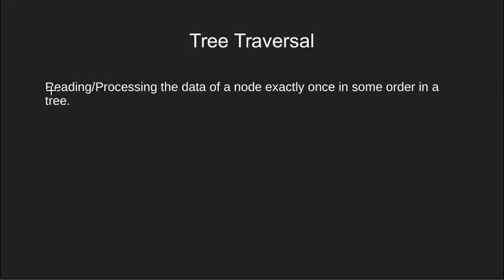In simple words, traversing a tree means to read or process the content of a tree node exactly once in some order. Since tree is not a linear data structure like an array or a linked list, where we have a logical start and a logical end, it can be traversed in many ways.